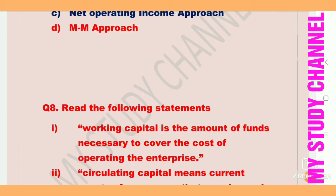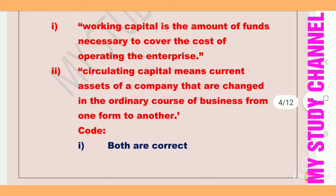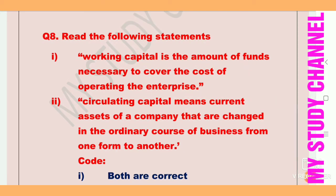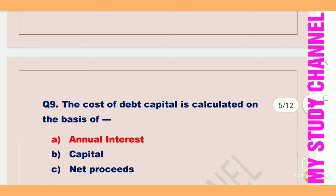Next question: read the following statements. First — working capital is the amount of funds necessary to cover the cost of operating the enterprise. Second — circulating capital means current assets of a company that are changed in the ordinary course of business from one form to another. Both statements are correct — the answer is both are correct.